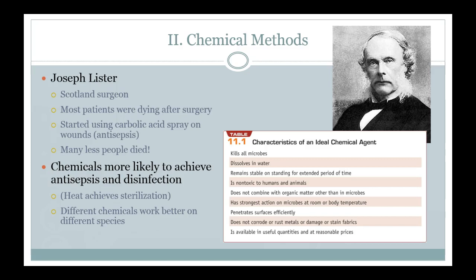Looking at chemical methods, this is a good time to introduce Joseph Lister, a Scottish surgeon. He noticed that many surgeries — often amputations for infections — resulted in patients dying not from the original condition but from post-surgical infection. He started using carbolic acid, spraying it on wounds, using it during surgery, and cleaning surgical instruments. A lot fewer people died after he implemented these methods, and others started using his approach as well.